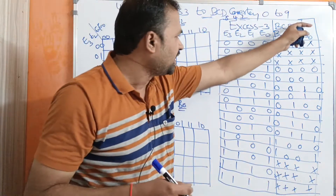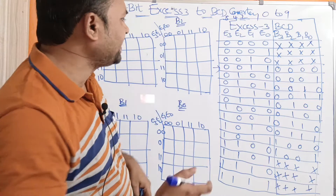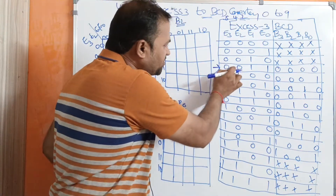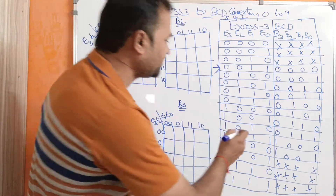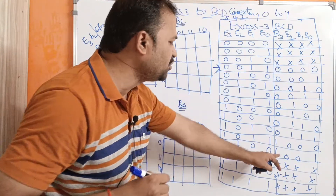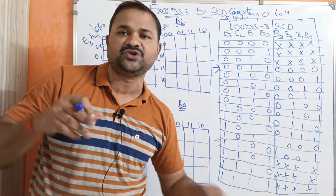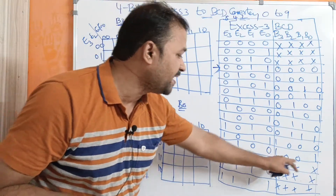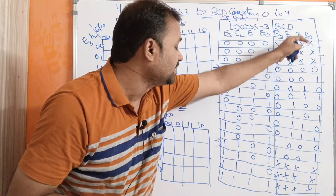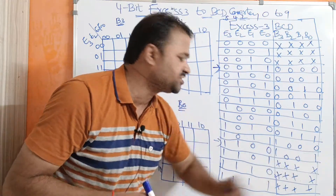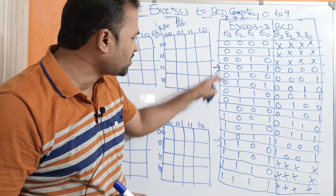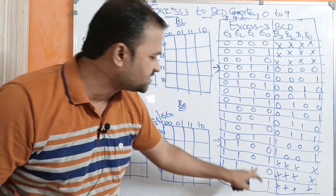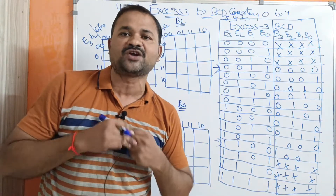So in order to get BCD from excess 3, we have totally how many combinations? The first valid combination starts from 0011, whereas the last combination is 1100. If you take 1100, that is 12: 12 minus 3 means 9. How to write 9 in binary notation? 1001. So we need to use only these combinations. The top 3 combinations as well as the bottom 3 combinations are don't care.